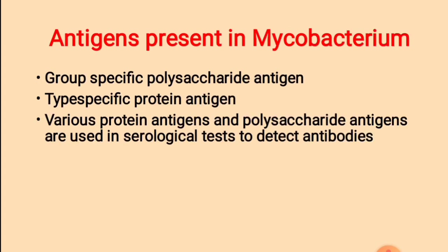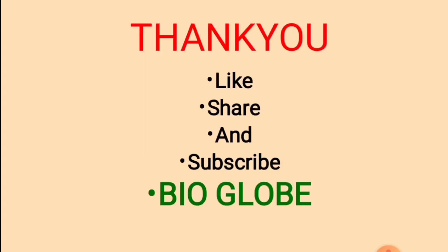Antigens present in Mycobacterium tuberculosis: (1) group-specific polysaccharide antigen; (2) type-specific protein antigen. Various protein antigens and polysaccharide antigens are used in serological tests to detect different types of antibodies. This concludes part one on Mycobacterium tuberculosis. Part two will cover further details. Thank you for watching — if you like this channel, please like, share, and subscribe.